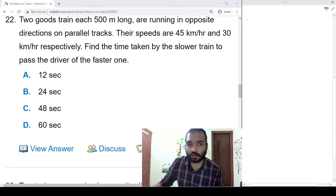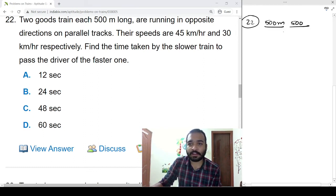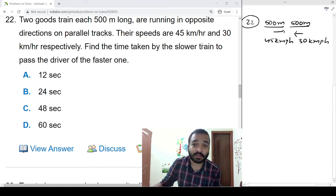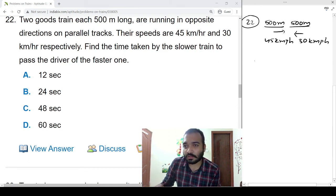Next, problem number 22: Two goods trains, each 500 meters long, are running in opposite directions. The speeds are 45 kmph and 30 kmph respectively. Find the time taken by the slower train to pass the driver of the faster train. The slower train is this one, this is the faster train.